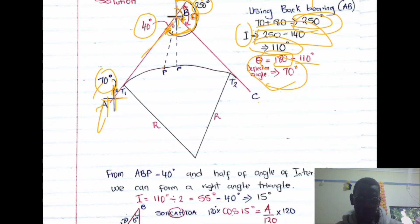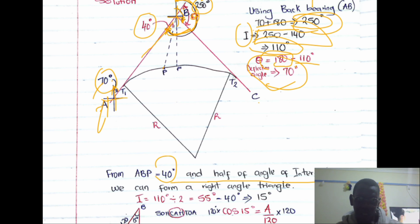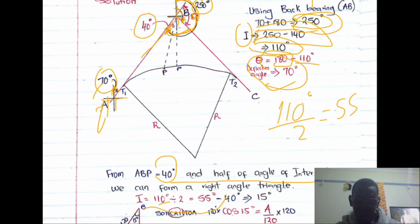From the given information, ABP is 40°. Half of the angle of intersection — which was 10° — gives us... actually, the half-angle used here is half of the deflection angle: 110° / 2 = 55°. So this 55° angle is used in the right-angle triangle.